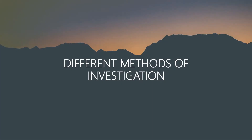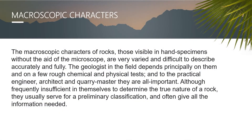Here are the different methods used in this investigation. The first is macroscopic characters. The macroscopic characters of rocks — those visible in hand specimens without the aid of a microscope — are very varied and difficult to describe accurately. Identifications in the field depend principally on them and on a few rough chemical and physical tests. To the practical engineer, architect, and quarry master, they are all important. Although frequently insufficient in themselves to determine the true nature of a rock, they usually serve for a preliminary classification and often give all the information needed.